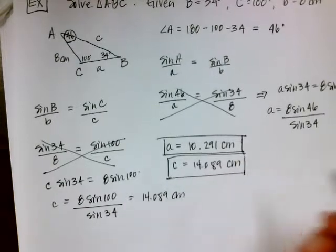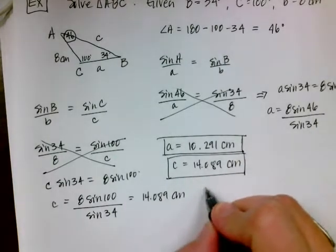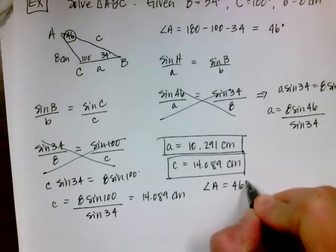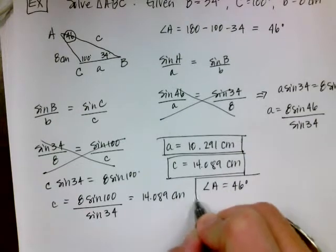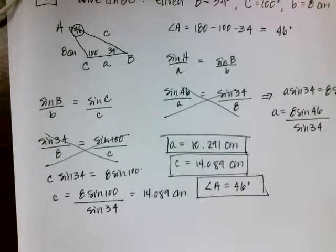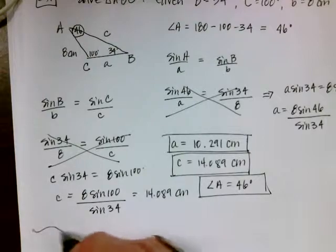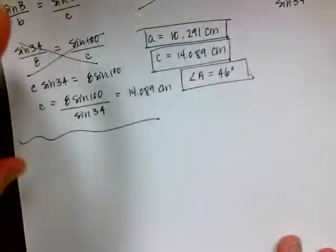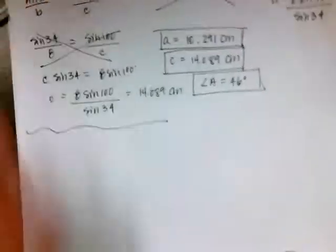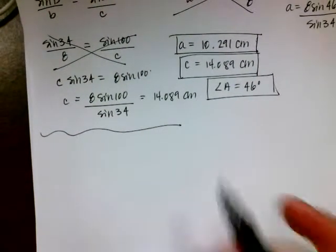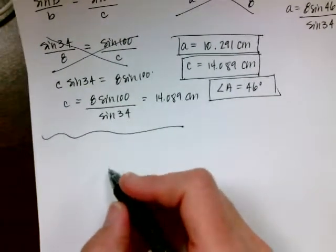Little c is 14.089 centimeters, and angle A was 46 degrees. It's actually really simple — the Law of Sines is kind of cool that way. The Law of Sines does have an area where it's deficient, but we're not going to talk about that in this course — we'll save it for pre-calc.